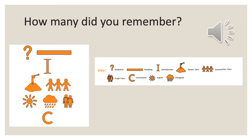Well done. How many did you remember? If you remember them all, that's fantastic. So we've got our key question — the question we're seeking to answer. The heading, because that gives us a bit more detail. An introduction, so important in a balanced argument because it sets out the two opposing arguments you're going to discuss. You've got your senior view, the community view — how other people react to it. Then you've got the pupil view because it will impact the pupils. You've then got a conclusion, which brings together all of the arguments and allows you to come up with a final conclusion. And then you've got your agree statements and your disagree statements because they support the argument that you're making.